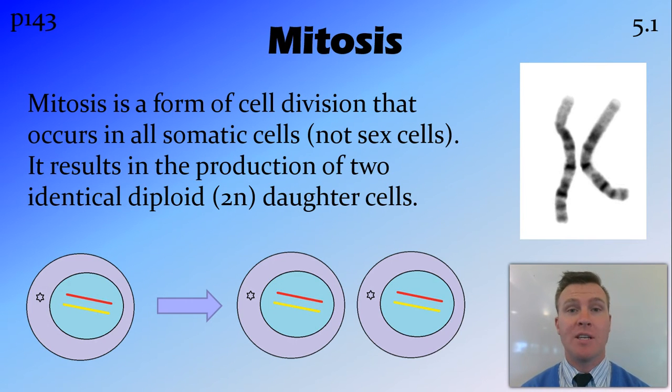So firstly, what is mitosis? It's a form of cell division, so we're splitting cells, that occurs in all somatic or body cells. So pretty much all the cells in the body, except for the sex cells being in the ovary and testes, undergo mitosis. They do this for growth and repair, and it results in the production of two identical diploid daughter cells. So two cells that are identical to the parent cell.